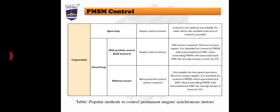This method is intended for the control of permanent magnet synchronous machines with trapezoidal back EMF. When controlling a permanent magnet synchronous machine with sinusoidal back EMF, the average torque is lower by five percent.